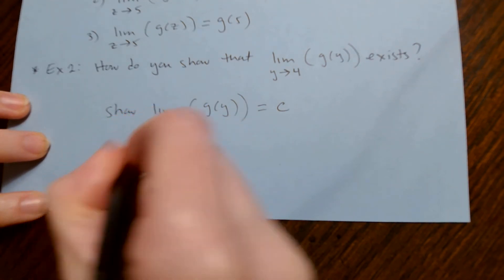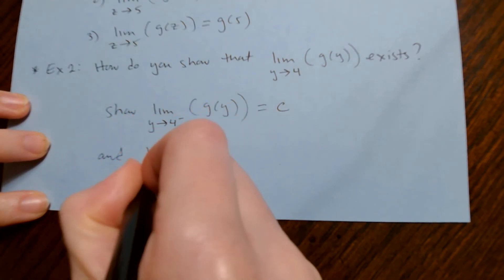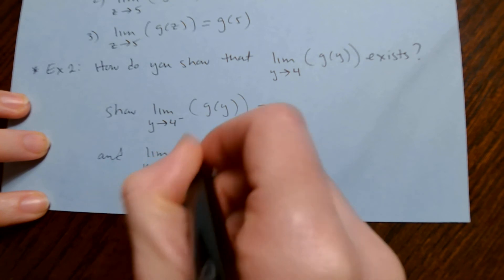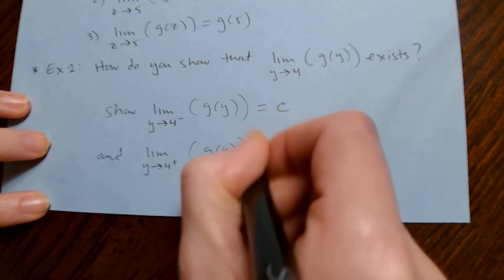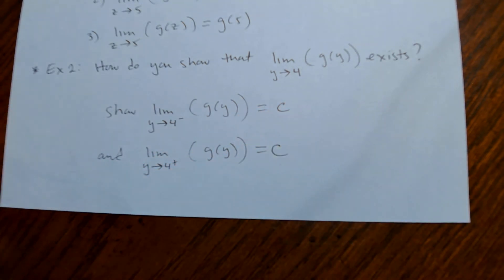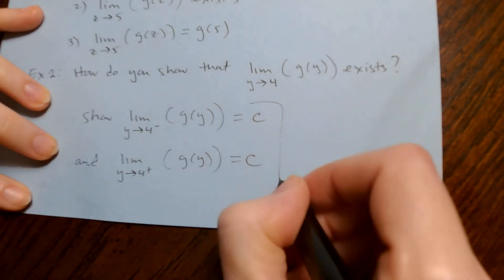And that the limit as y approaches 4 from the right of g(y) equals the same concrete number c.